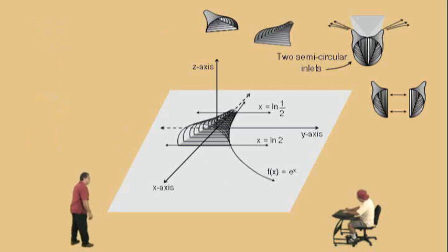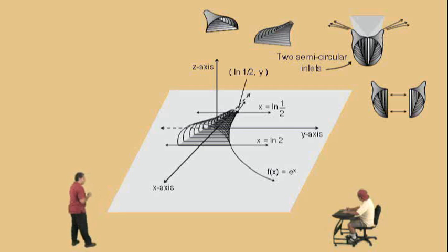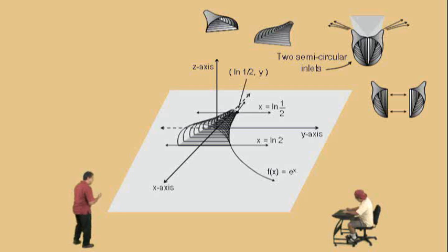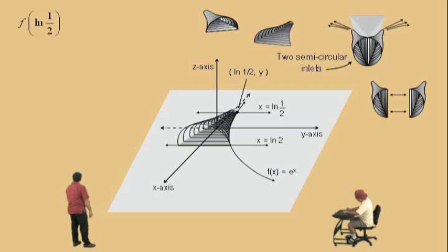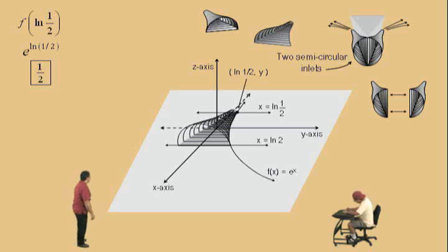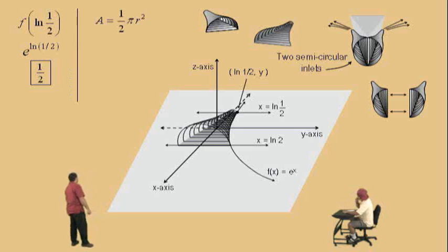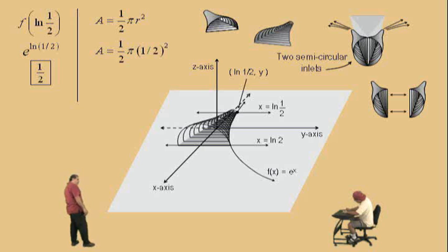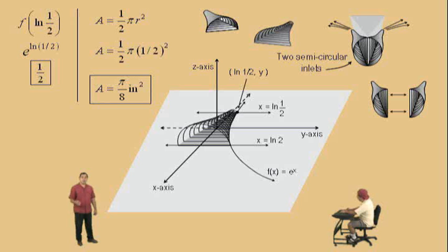Our next question is to find the area of one of the individual outlets, which are semicircular. For that, we've got to look at the other side of the graph — the point of intersection between the line x equals natural log of 1/2 and f of x equals e to the x. That y-coordinate represents the radius of the semicircular outlet. We substitute x equals natural log of 1/2: e to the natural log of 1/2 equals 1/2. Since our outlets are semicircular, we use the formula area equals (1/2)πr². Substituting r equals 1/2: (1/2) times (1/4) equals 1/8. So our area is π/8 inches squared.